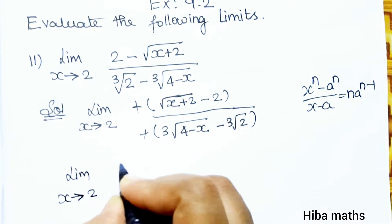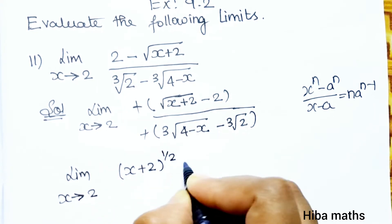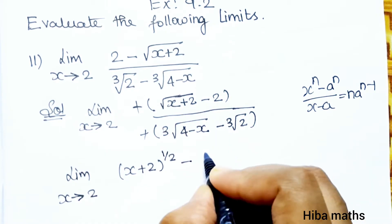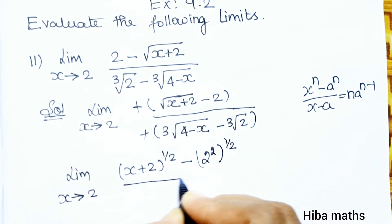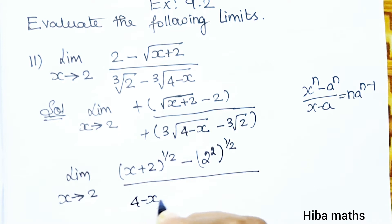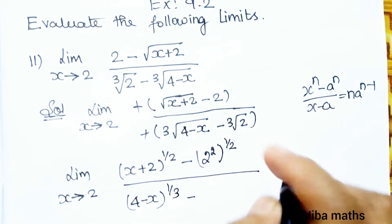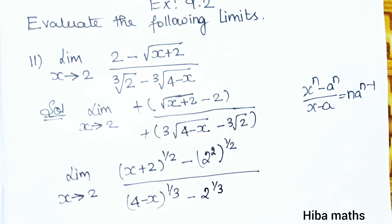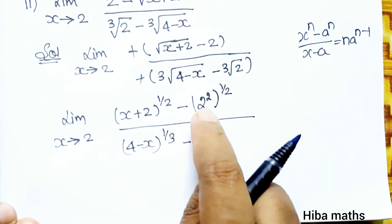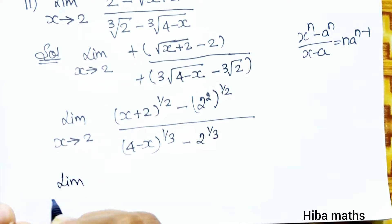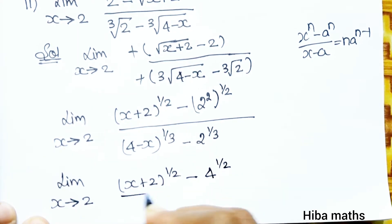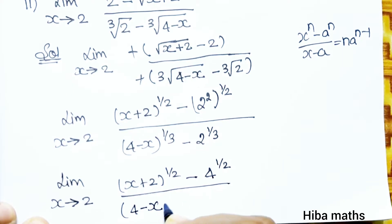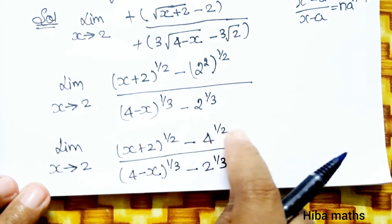Limit x tends to 2: rewrite as (x plus 2) power 1 by 2, minus 2 power 1 by 2 — since square root is power 1/2. Divided by (4 minus x) power 1 by 3, minus 2 power 1 by 3 — since cubic root is power 1/3. Note that 2 squared is 4, so we rewrite: (x plus 2)^(1/2) minus 4^(1/2), divided by (4 minus x)^(1/3) minus 2^(1/3).